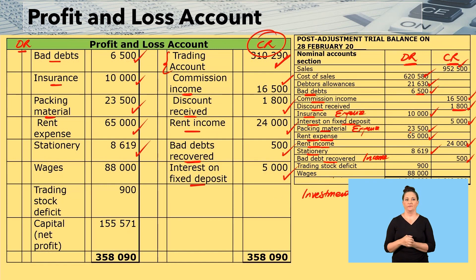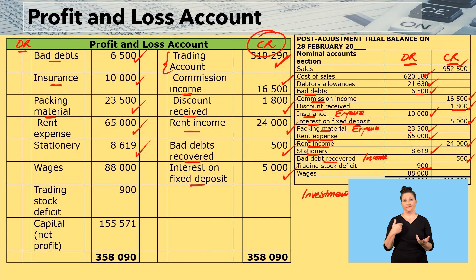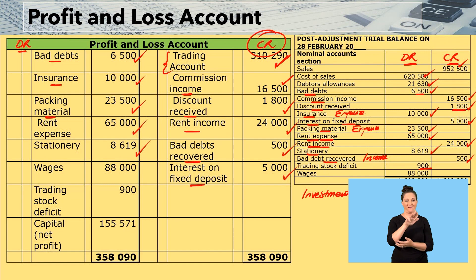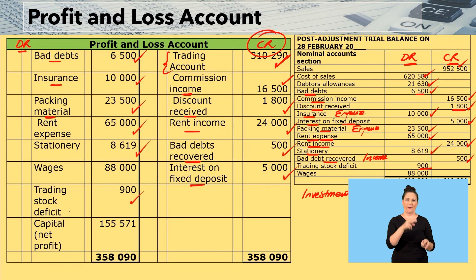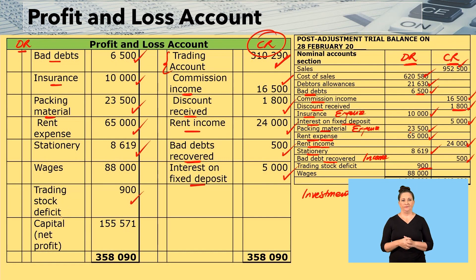The next one is trading stock deficit. Trading stock deficit is an expense, so I'll bring it to the debit side of the profit and loss account — trading stock deficit $900.